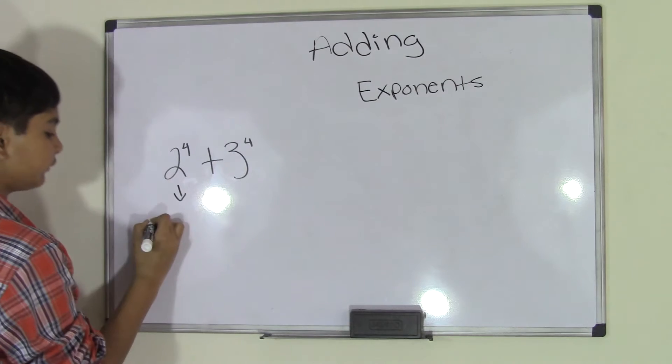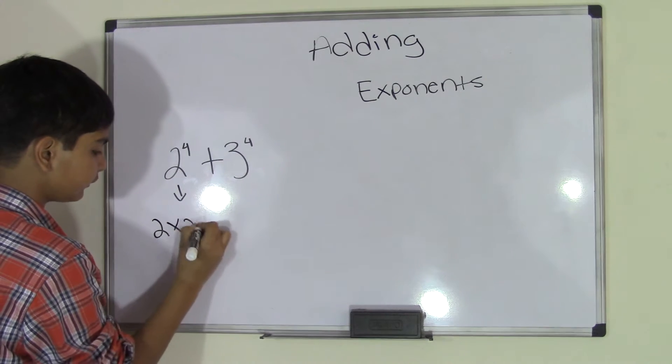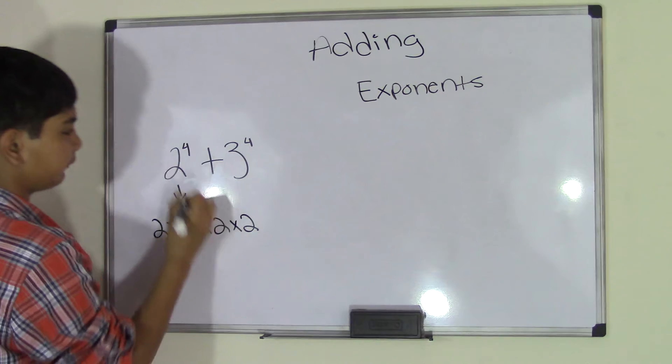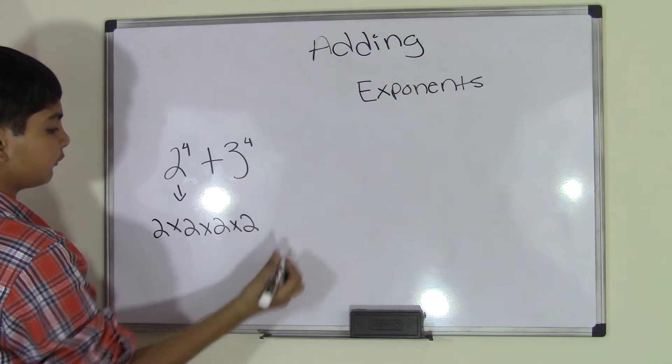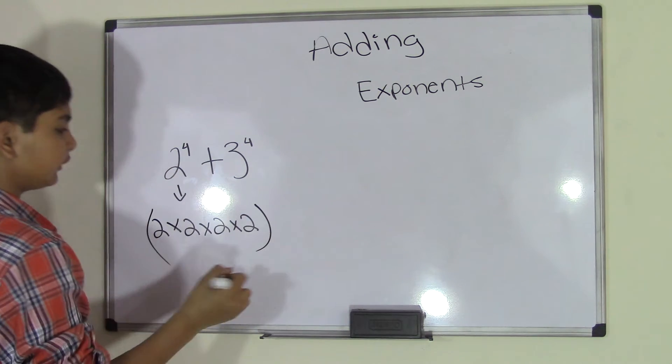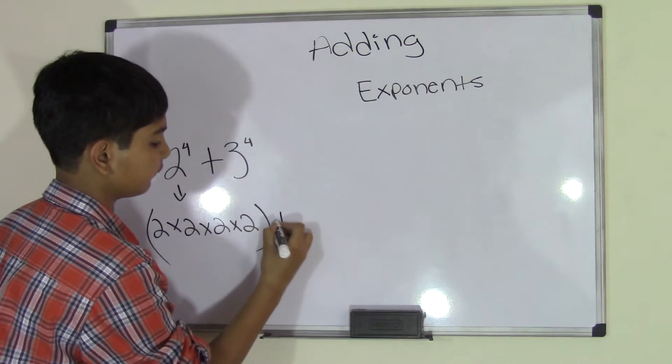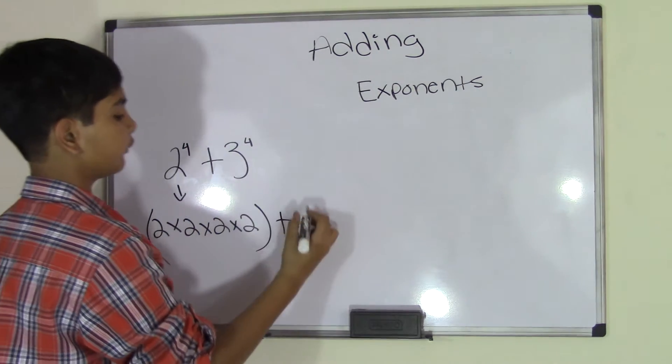So we'll do the 2 times 2 times 2 times 2, 4 times because it's 2 to the power of 4. And we can add parentheses to divide this from the other section. So we'll go ahead and add the addition sign. Do the same thing over here.